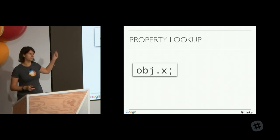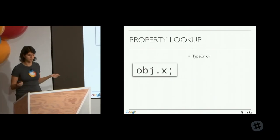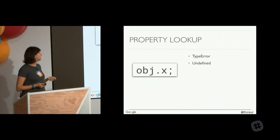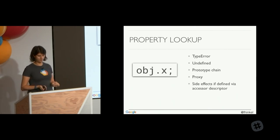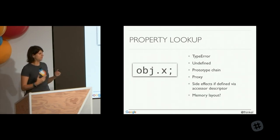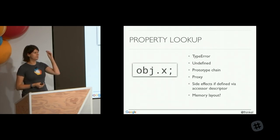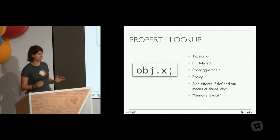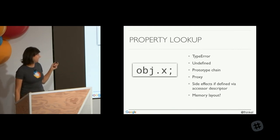But for a compiler, it's a lot of work because you're not telling the compiler upfront what will happen. If you do something as simple as a property lookup in JavaScript — like object.x, or console.log — there are a lot of things that can happen. You could get a type error. X could be undefined. X could be undefined on the object but defined further up on a prototype chain. X could be a proxy with a get trap, or have an accessor descriptor with a set and get function with side effects. And even if X is defined on the object, the compiler still doesn't know where to find the value of X in the memory layout — because it has no blueprint of the object.